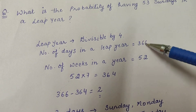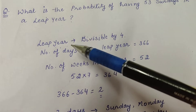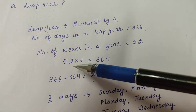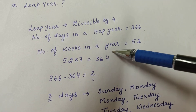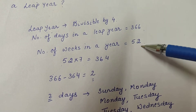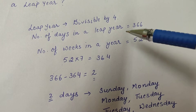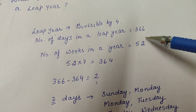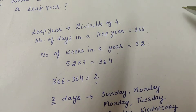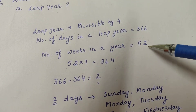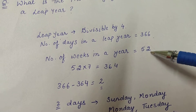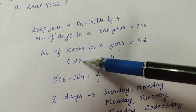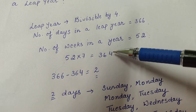In a leap year there are 366 days. Now, you know that there are 52 weeks in a year. A week starts from, say, Wednesday, and from Wednesday till the next Tuesday is considered one week. There are 52 complete weeks in a year, and since there are 7 days in a week, 52 × 7 = 364 days.